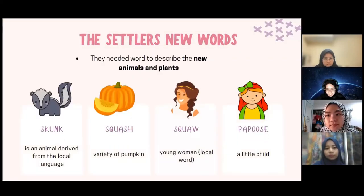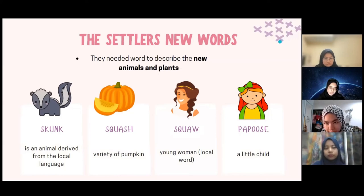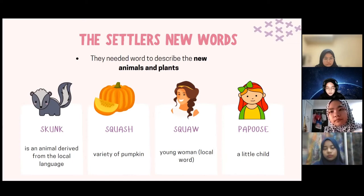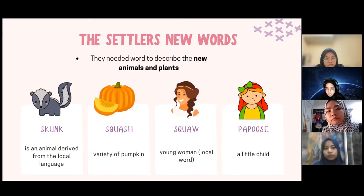The settlers formed several new words. The settlers needed new words to describe the animals and plants they encountered in the native land. Here are some examples: skunk, an animal derived from the local language; squash, to describe a variety of pumpkin; squaw, to describe a young woman; and papoose, to describe a little child.